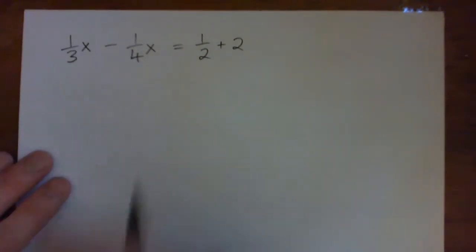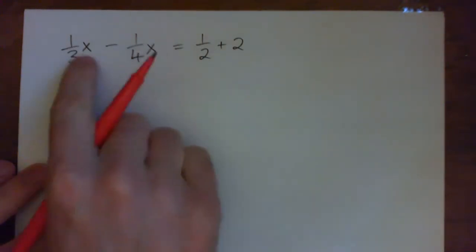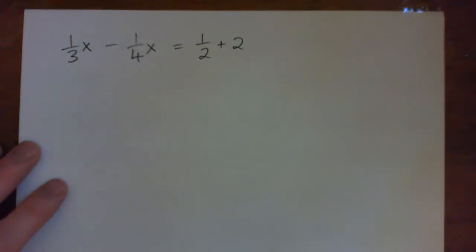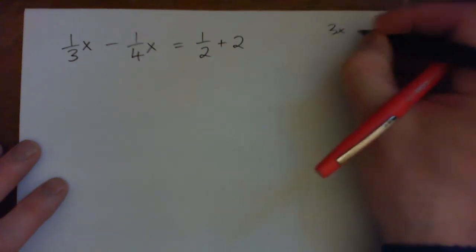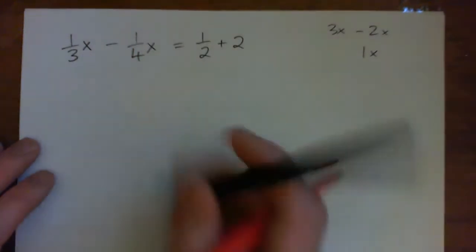We need to simplify the left and then simplify the right. On the left we have like terms, these are x terms. It's kind of like having three x minus two x, that would make one x. Instead we have a third x minus a quarter x.